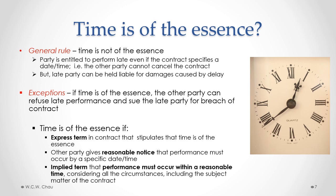When is time considered to be of the essence? First, where there is an express term in the contract that stipulates that time is of the essence — literally written into the contract. Second, where the other party gives reasonable notice that performance must occur by a specific date or time. Third, where there is an implied term that performance must occur within a reasonable time considering the circumstances, including the subject matter of the contract.